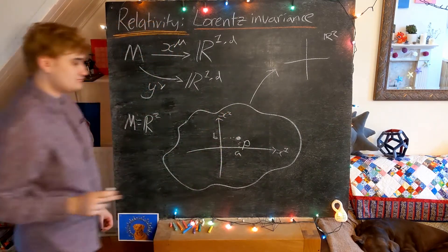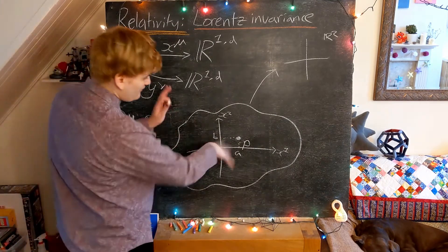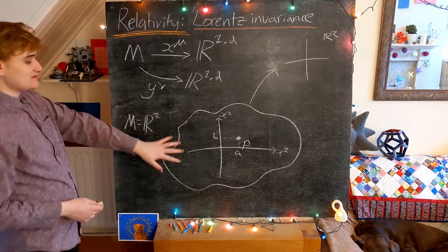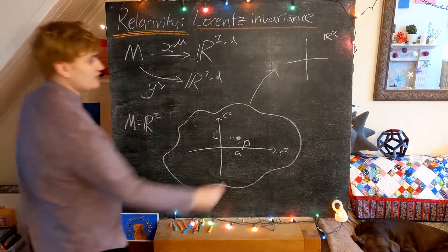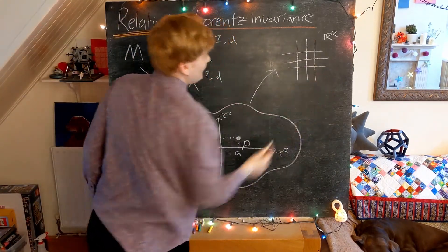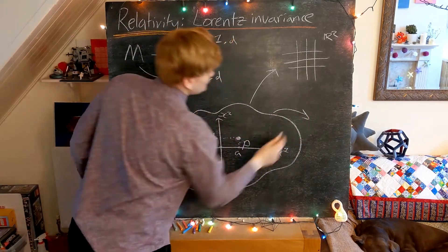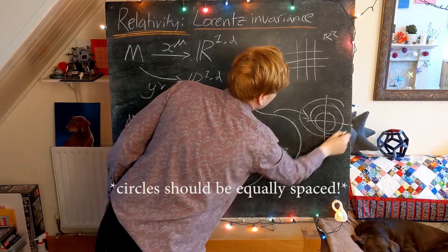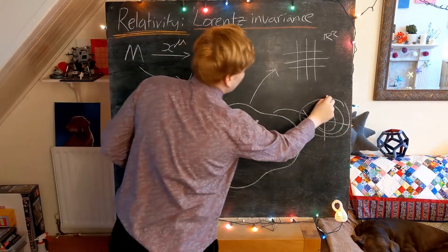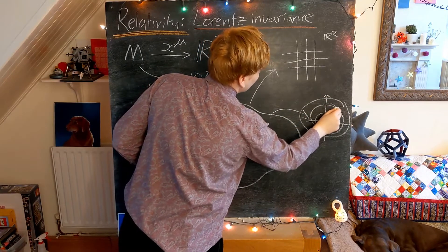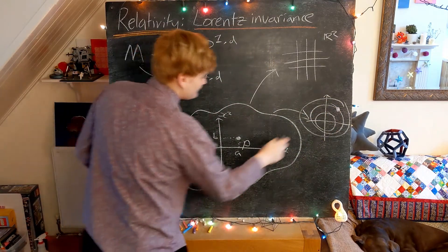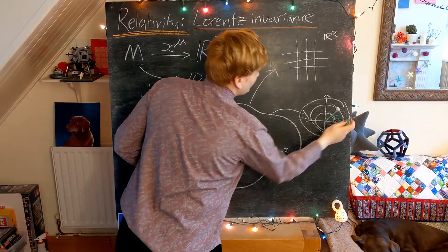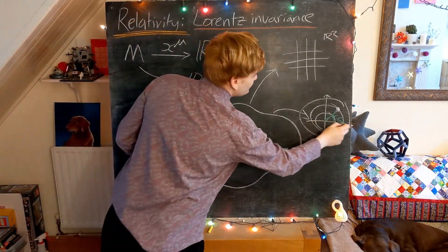But now what we need to realize is that this coordinate set of axes which I've drawn was completely arbitrary. I could have instead decided to draw not a Cartesian kind of square coordinate grid. I could have instead chosen a polar coordinate grid, something that looks like this, where we now specify the position of any point by essentially giving its radial distance from the origin, and then how far we've kind of swept around from this zero point here.